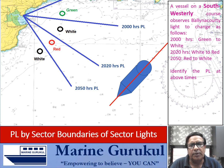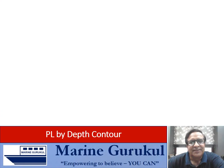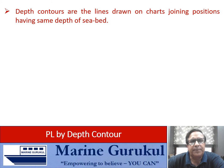What you need to appreciate is that the change of color has to be seen together with the course that the vessel is steering. Now, PL by depth contour: depth contours are lines drawn on a chart joining positions having the same depth of the seabed.